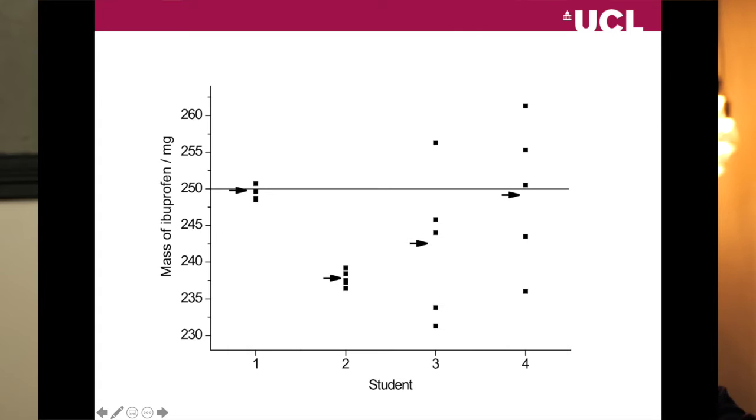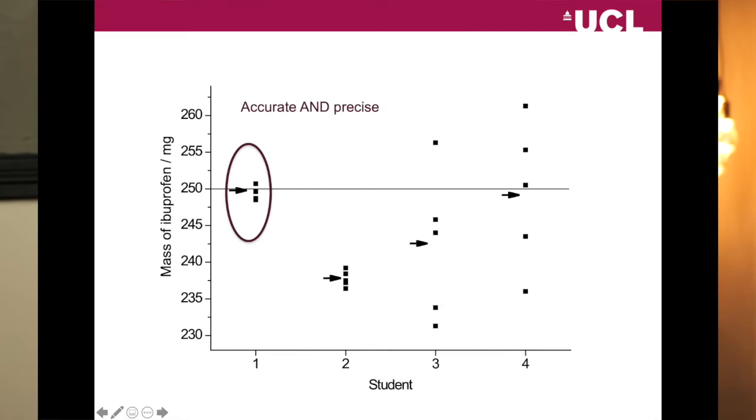Let's look at student number one. Consider precision first — precision means spread in the data. Are those data points closely grouped together? Yes — so that student is operating precisely. Accuracy relates to how close the mean of their data is to the true value, shown by the black arrow. The arrow is very close to 250, so student number one is operating both accurately and precisely. If we were offering jobs to these four students, we would rank student one as the best operator — they appear to be both accurate and precise.